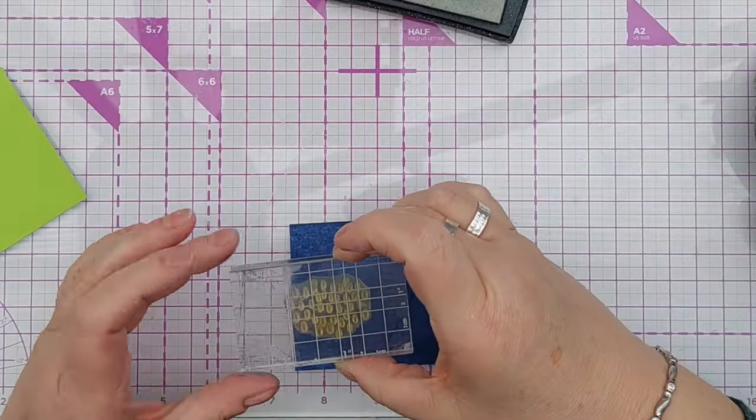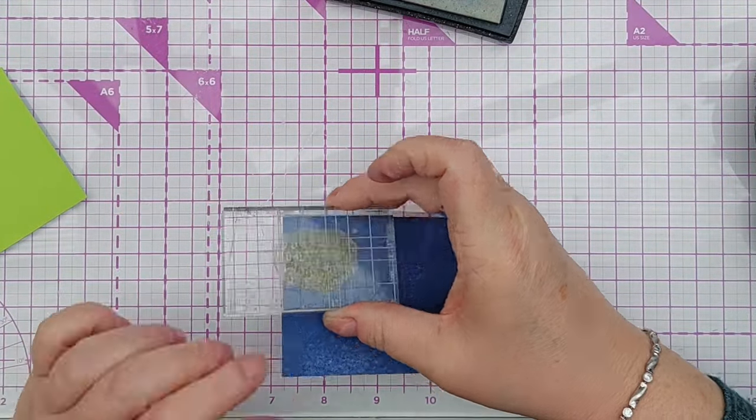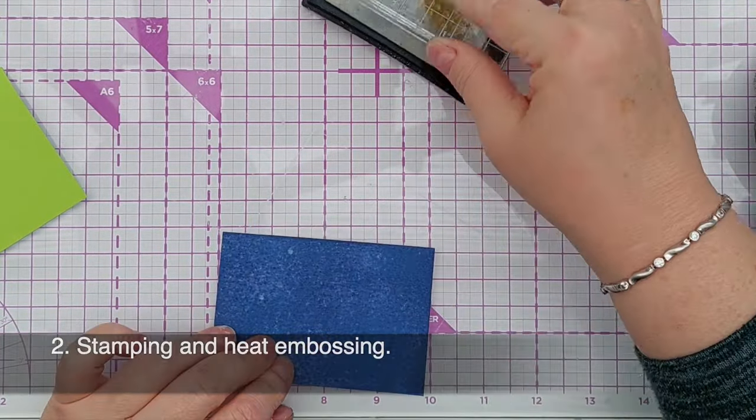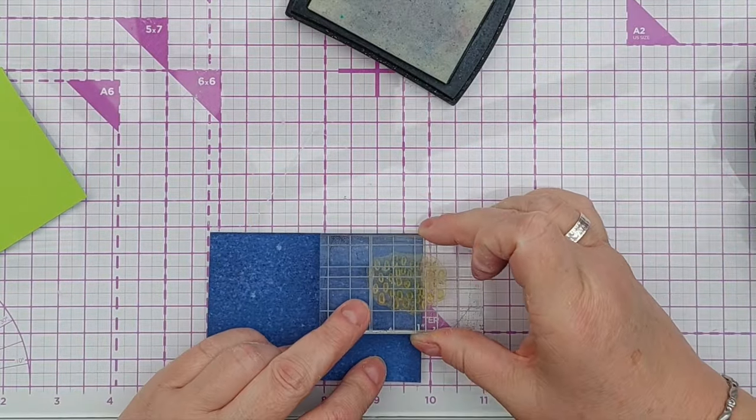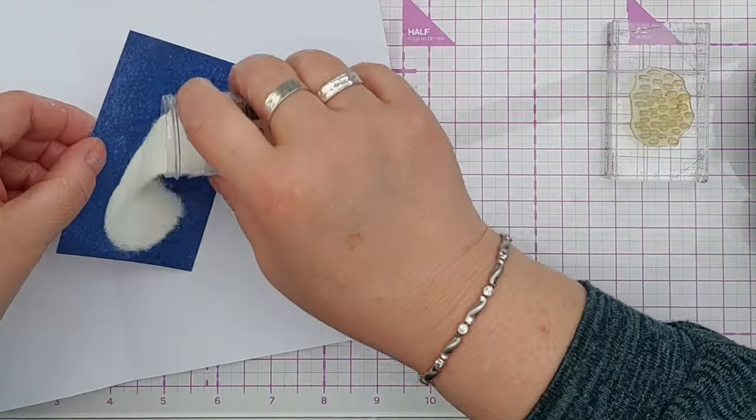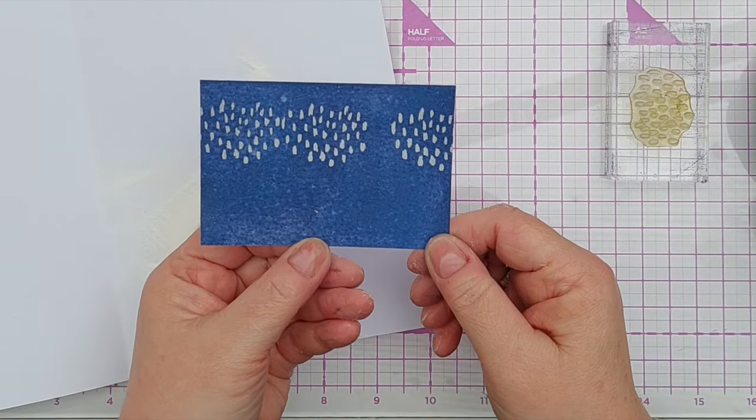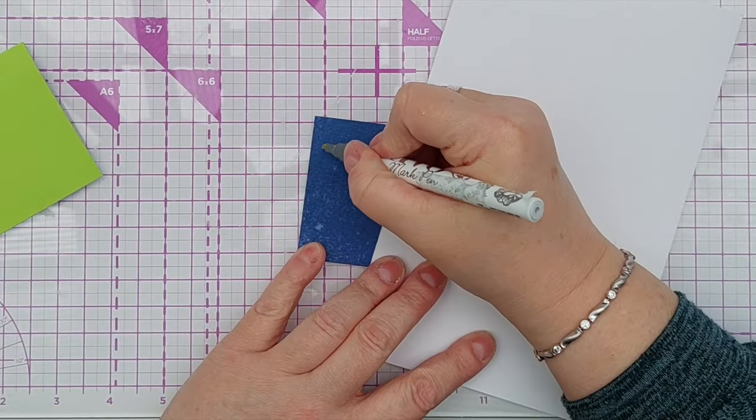Because my next experiment was stamping and heat embossing, so I found this mixed media mark stamp in my stash, stamped it on in embossing ink, poured over the embossing powder, and as I say set it aside for later.